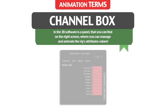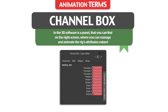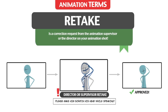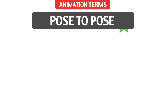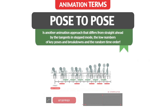Channel Box: in 3D software, it is a panel found on the right side of the screen where you can manage and animate the rig's attribute values. Retake: a correction request from the animation supervisor or director on your animation shot. Pose to Pose: another animation approach that differs from straight ahead by using tangents in stepped mode, a low number of key poses and breakdowns, and a random time order.